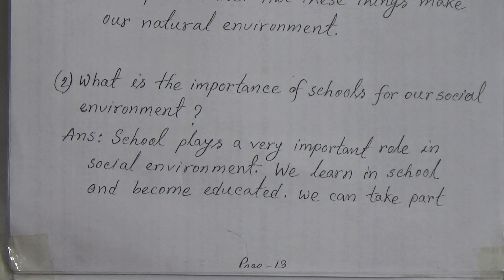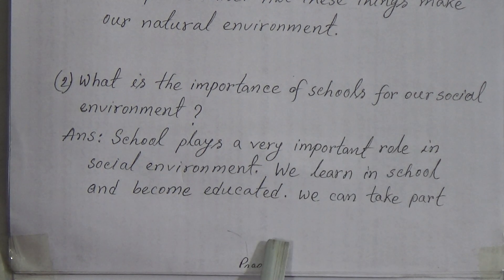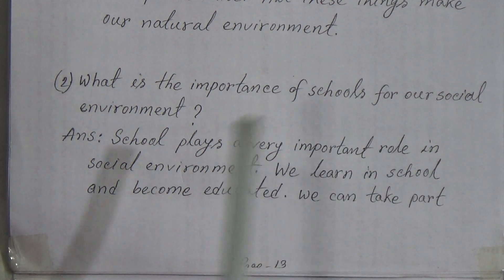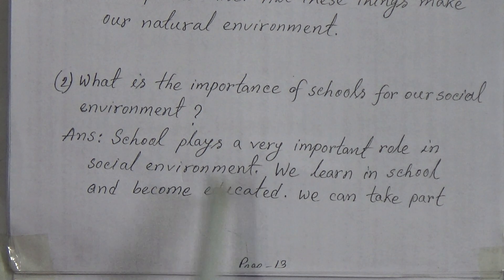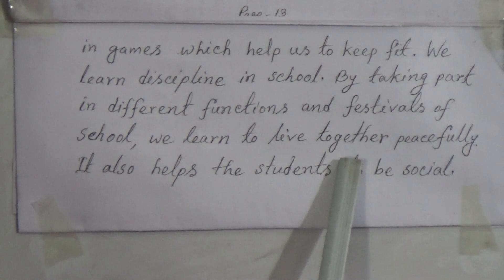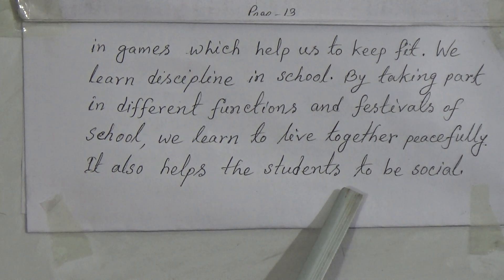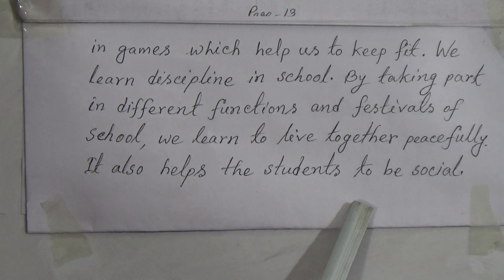School has a great impact in our society. It is important for social environment. We can learn from school, become educated, take part in games, learn discipline, take part in different functions and festivals, and learn how to live together. We can get every idea from school. So school is important for our social environment.